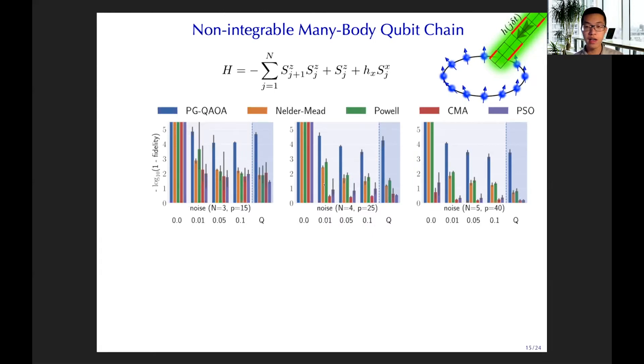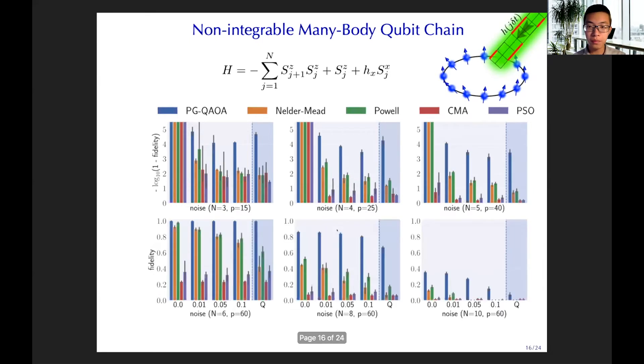For the noise free case and the Gaussian noise case with different levels and the quantum error case, you can find when there's no noise, every algorithm looks pretty good. But when there's noise and the noise level is getting larger, the PGQAOA still remains the high performance. We also push forward to larger number of qubits. You can see that N here is getting larger, but we keep the P fixed. P is a parameter in QAOA. So the fidelity is supposed to go down, but PGQAOA remains the highest.